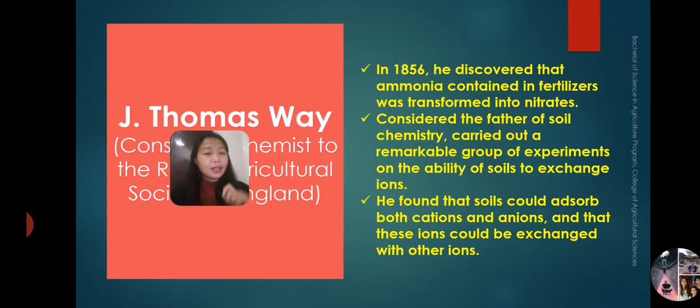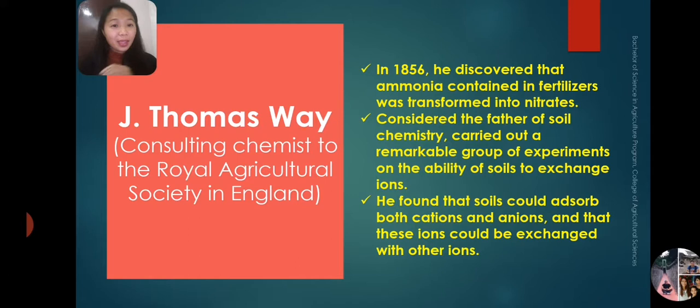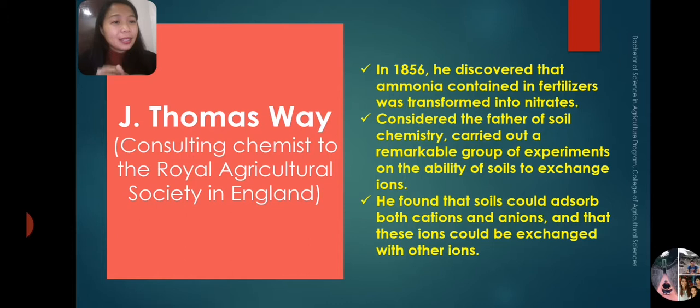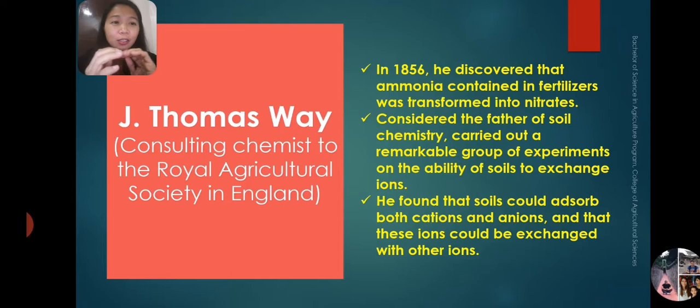J. Thomas Way was a consulting chemist to the Royal Agricultural Society in England. In 1856, he discovered that ammonia contained in fertilizers was transformed into nitrates — the process of nitrification. He was also considered the father of soil chemistry and carried out a remarkable group of experiments on the ability of soils to exchange ions.